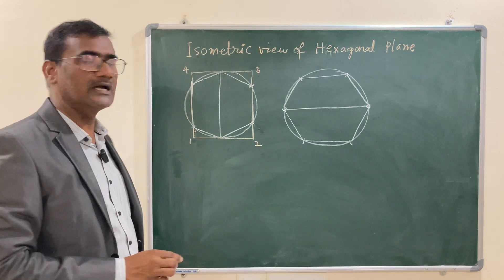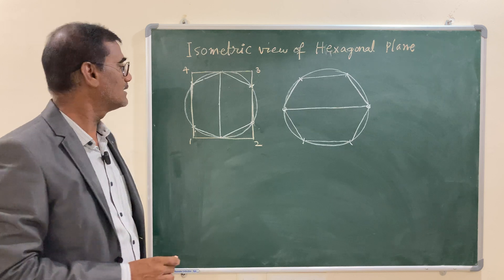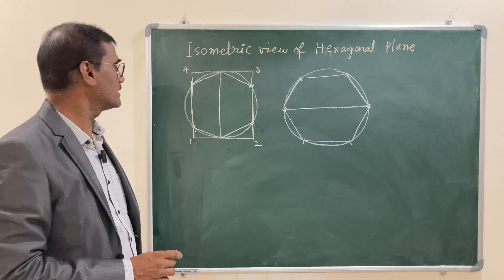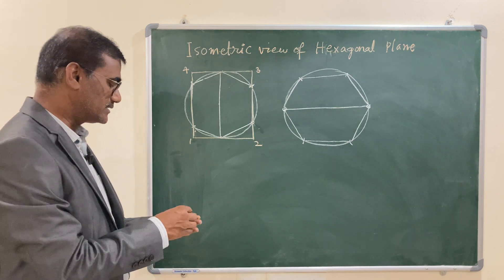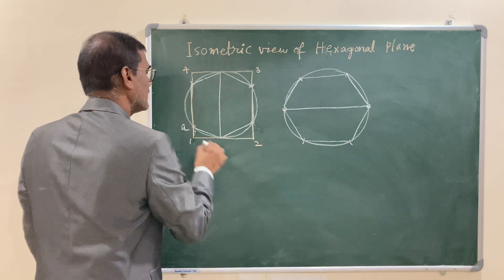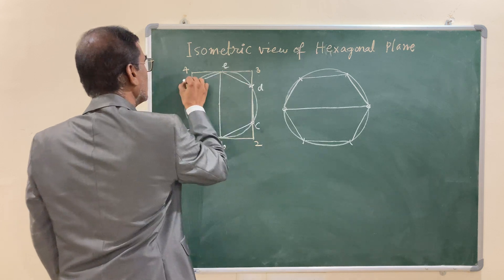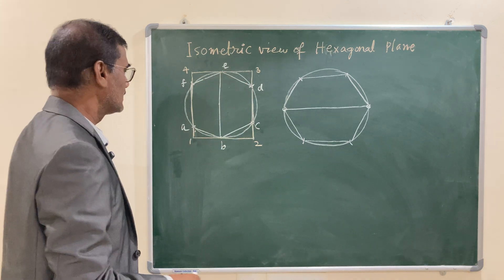First of all, you have to draw the isometric view of this rectangle. Then, with the help of compass, you have to locate the points. And these points, I am calling it as edges of the corners as A, B, C, D, E, and F. So, in this case, let us draw a horizontal line.